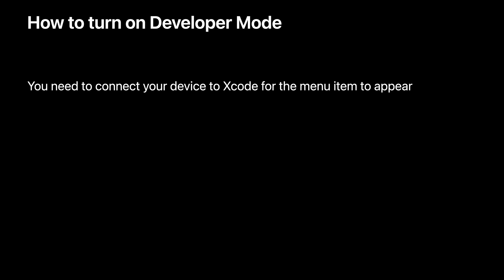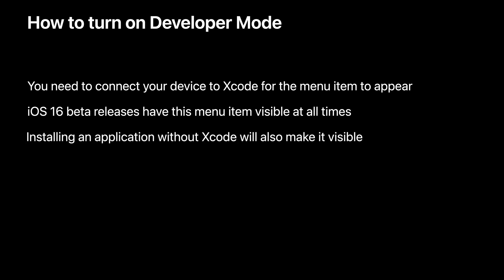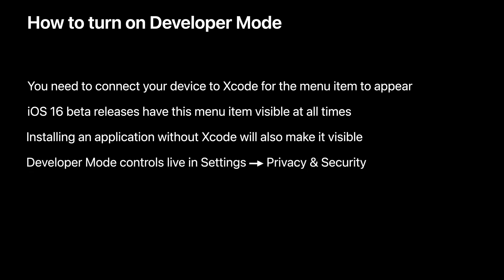Turning on developer mode is straightforward, but first you need to connect your device to Xcode for the developer mode menu item to appear. The beta releases that you have downloaded will have the menu item always visible for the time being. Installing a developer-signed application without Xcode, like through Apple Configurator, will also make the menu item visible. Once you've done that, you can find the developer mode controls under Privacy and Security in Settings. And for automation, you can use the new devmodectl that ships by default on macOS Ventura, but more on that later.